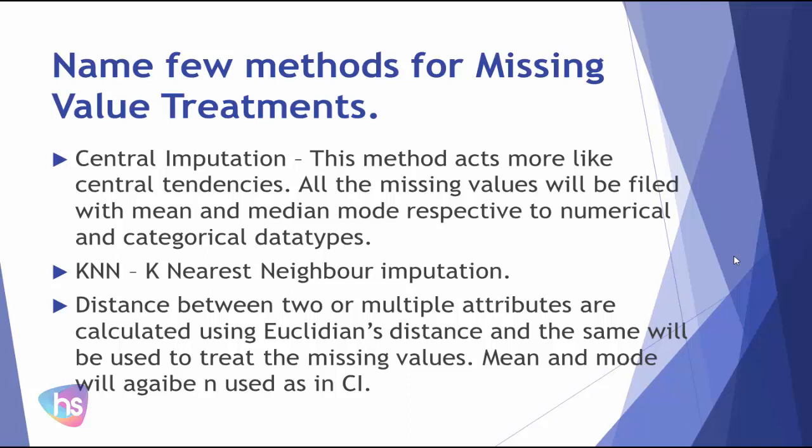In KNN imputation, the distance between two or more attributes is calculated using Euclidean distance, and the same will be used to treat the missing values. Mean and mode will again be used as part of this process.